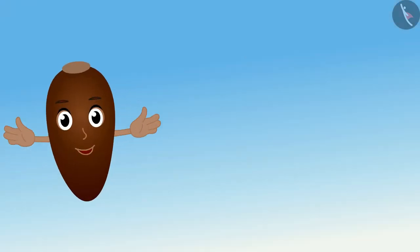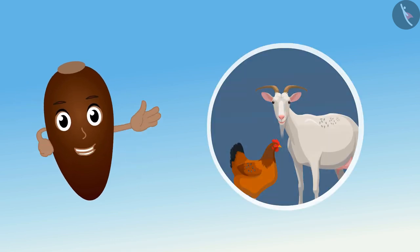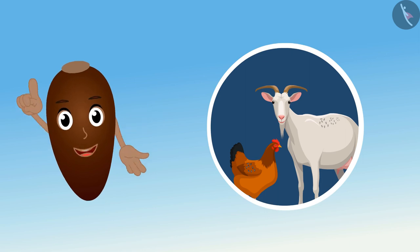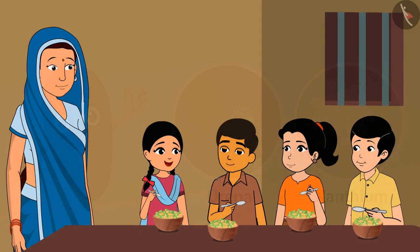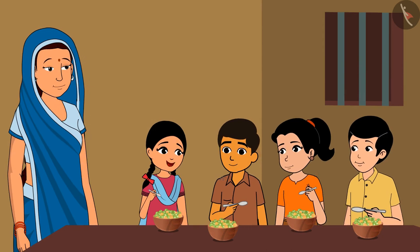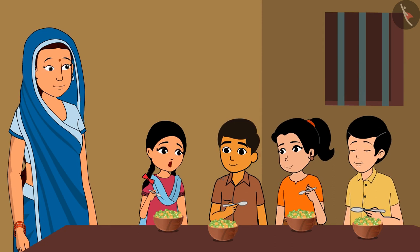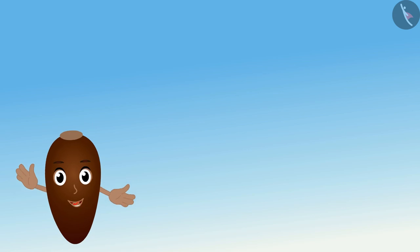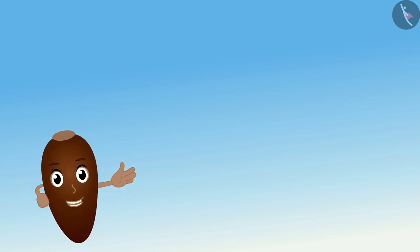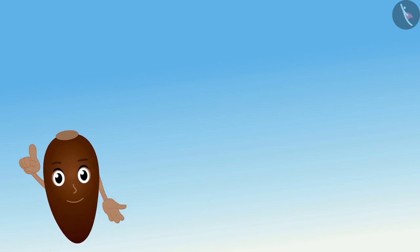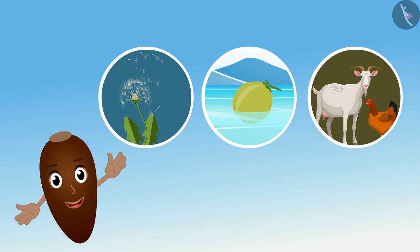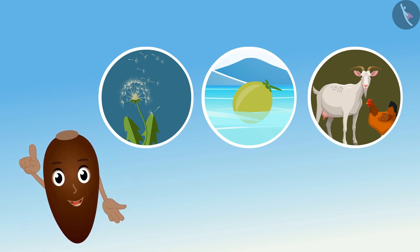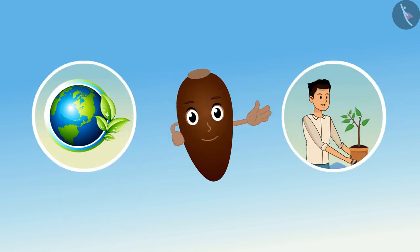Some seeds which are pointed and have hooks attach themselves to the bodies of animals. Then wherever these animals go, they take the seeds along and drop them on the way. Examples are Urena and Xanthium. The nature is so amazing — such tiny seeds get dispersed with the help of so many agents. I hope you have learned about dispersal of seeds. Next time when you see a seed or plant, think about how the seeds would have dispersed. We are dispersed with the help of wind, water and animals, and we begin a new life. So friends, plant a lot of seeds and trees and make our earth green.